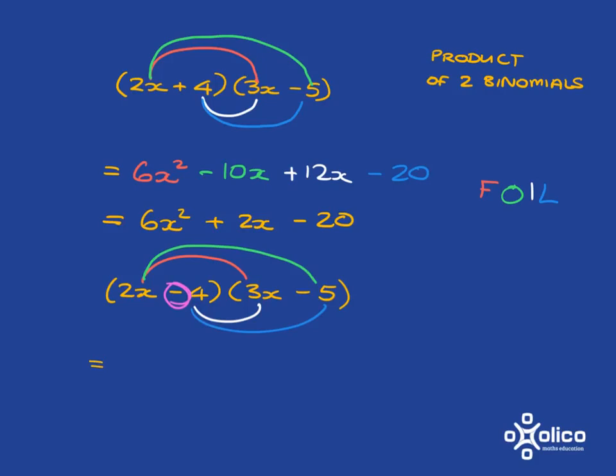Let's do the reds first. 2x times 3x is 6x squared. Then let's do the outers, which is the green. 2x multiplied by negative 5 gives me negative 10x.